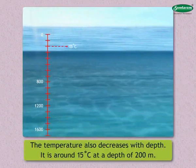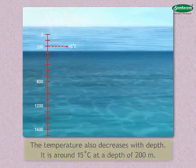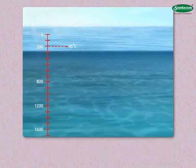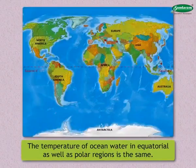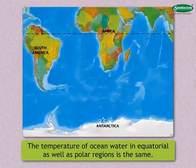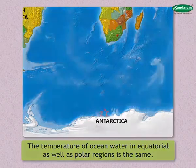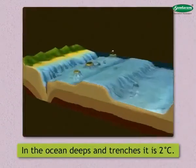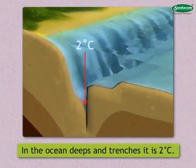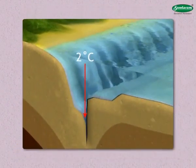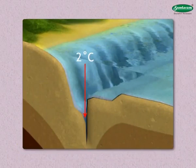It is around 15 degrees centigrade at a depth of 200 meters. Towards greater depths, the temperature of ocean water in equatorial as well as polar regions is the same — around 2 degrees centigrade. Even in the ocean deeps and trenches it is 2 degrees centigrade, because the density of ocean water is highest at this temperature and hence it always remains at the base.